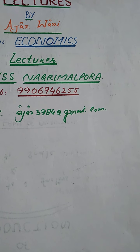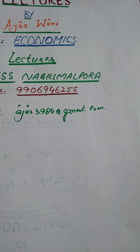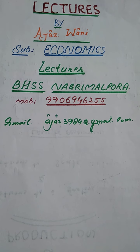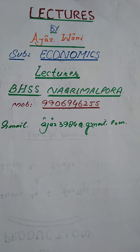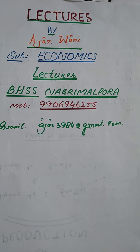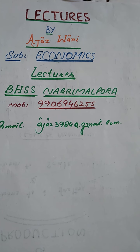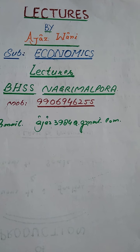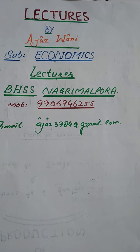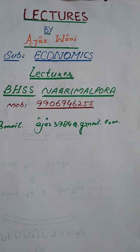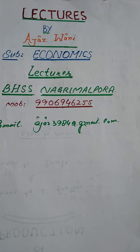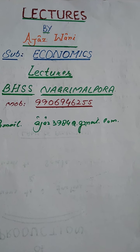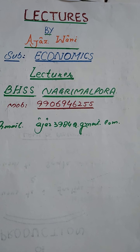There are three aspects of return to scale: we have increasing returns to scale, constant returns to scale, and diminishing returns to scale. When all factor inputs increase in some constant ratio and this causes a proportionately greater increase in output, that is increasing returns. Today we will discuss the causes of scale economies.